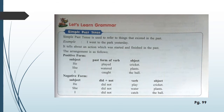Next, we will look at the formation of negative sentences. Negative sentences mean manfi jumle — jinn mein nahi ka lafz aata ho. The structure is: Subject plus did not plus first form of verb plus object. Examples: 'He did not play cricket', 'She did not water plants', 'I did not catch the ball'. Remember, you will not use the past form with 'did not' — you will always use the first form of the verb with 'did not'.